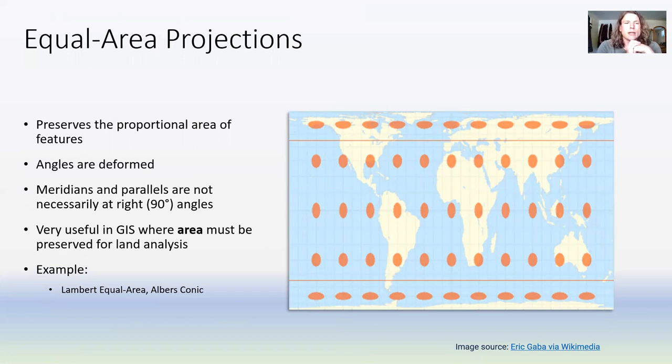We've also got equal area projections that preserve the proportional areas of features, but the angles and shapes are deformed. The areas of all corresponding shapes are maintained. These projections are designed to maintain the area, they might squish or stretch something a little bit to do that. These are really important projections, especially if you're doing anything where the area must be preserved for analysis. For instance, if you want to calculate population density, the number of people per square kilometer, you have to use an equal area projection.